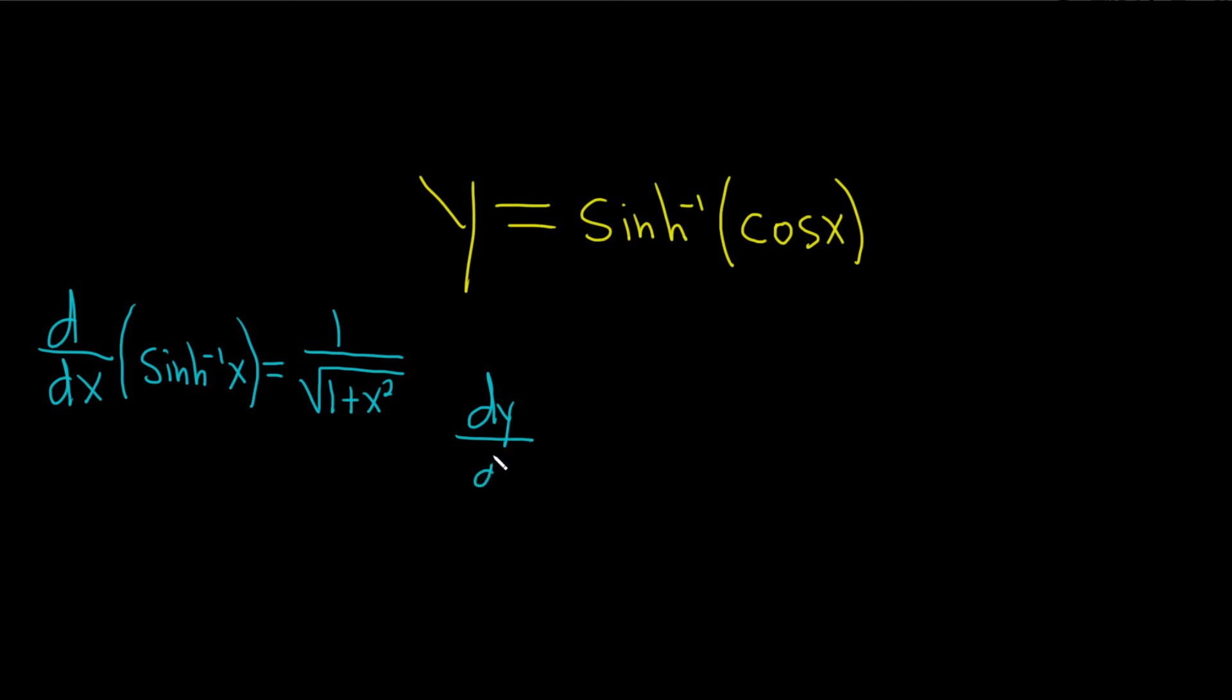So dy dx. So we'll take the derivative of the outside function, which is sinh inverse. So it's 1 over the square root of 1 plus and then cosine x and that's squared.